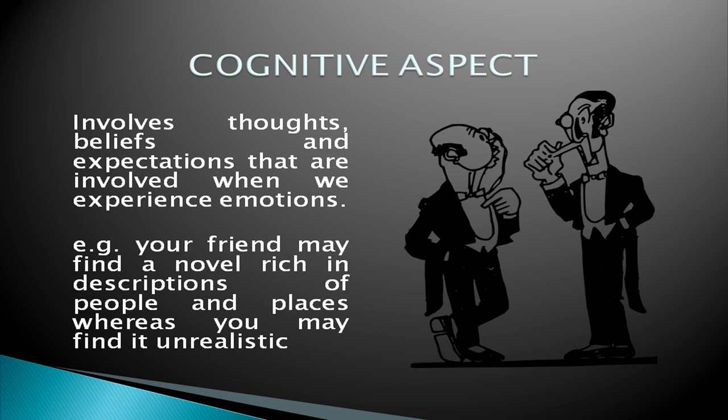The first is the cognitive aspect, that is, the thought process. The cognitive aspect involves the thoughts, beliefs, and expectations that are involved when we experience emotions. For example, your friend may find a novel's written description of people and places vivid, whereas you may find it unrealistic — that is your thought process about a particular aspect.